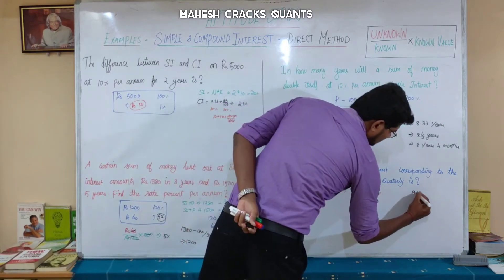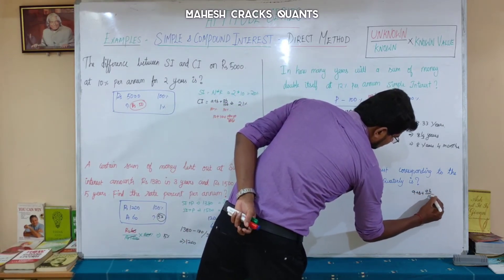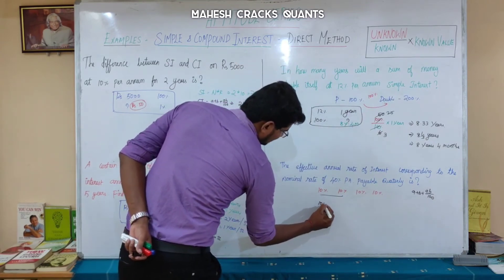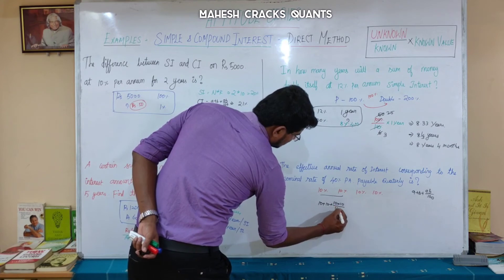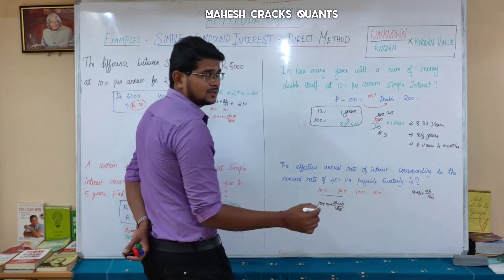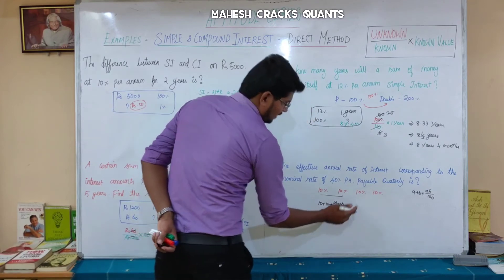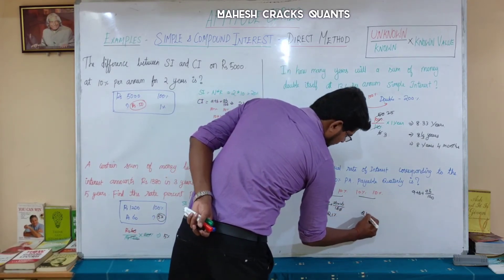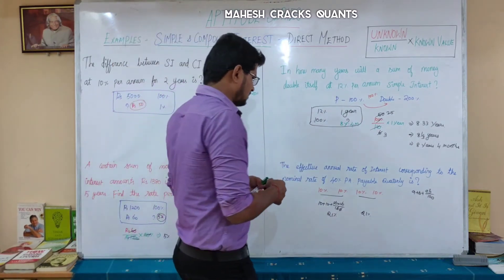Using the successive increase formula A plus B plus AB divided by 100, we first combine the first two quarters: 10 plus 10 plus (10 into 10 divided by 100). The zeros cancel to give 10 plus 10 plus 1 equals 21%. Then we combine the result with the third quarter using the same formula with 21 and 21.